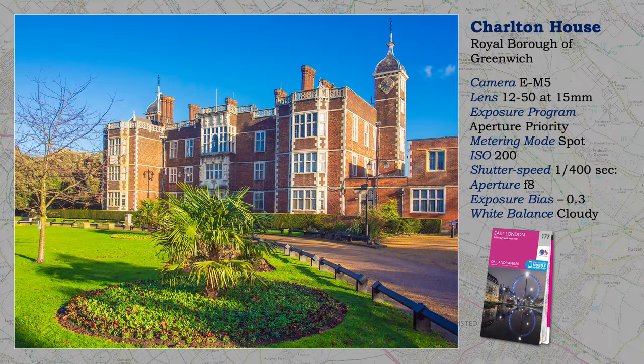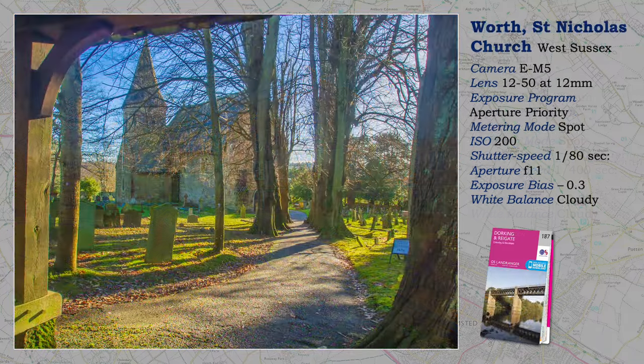I enjoy finding interesting buildings away from the public gaze, and Charlton House, not far from the Greenwich honey pot, might fall into that category. For buildings, you need the right day to make them come alive, and in winter shadows can be a problem. This is the west front — so should I have waited for the sun to illuminate the facade better, or does it currently provide a degree of modelling? More shadows, but this time leading the eye to the church framed by the lich gate.